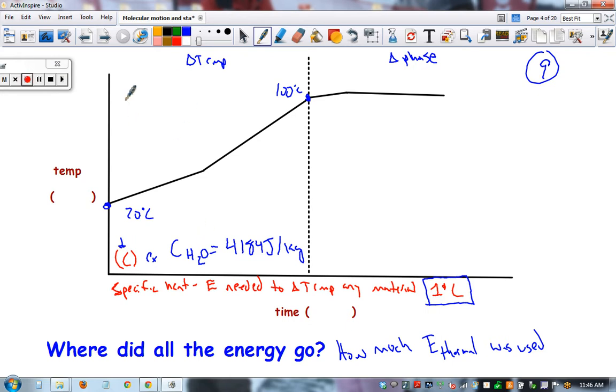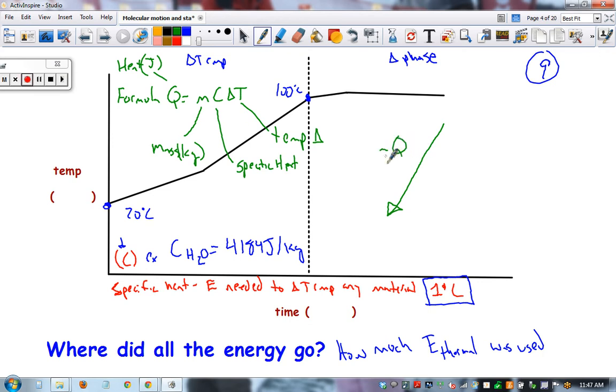Your formula is Q equals MC change in temperature. This is the specific heat of whatever material. We could be heating up a certain type of metal or liquid. For example, alcohol has a different specific heat than water. M is mass in kilograms. Q is heat added or taken away in joules. If an object was cooling off, it would be a negative Q, a negative heat loss. Heat would be removed because temperature is cooling down.